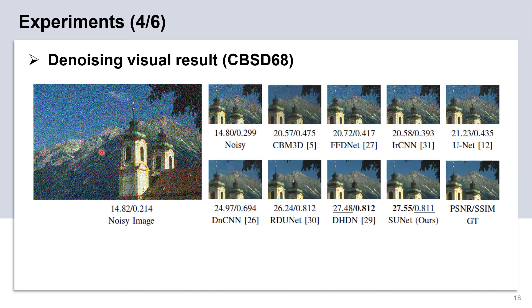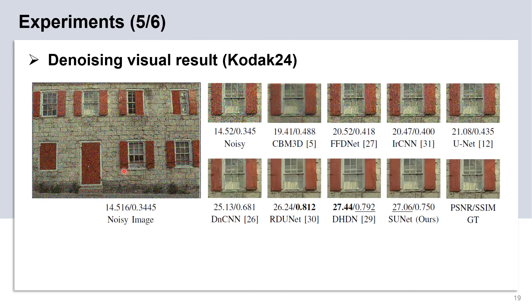Here is the visual result image from CBSD68. The input noisy image has a noise level of sigma equals 50, and you can see that our SU-Net has the best PSNR values and runner-up SSIM scores. This figure also displays the denoising result comparing with other methods on the Kodak24 dataset, also at noise level sigma equals 50.